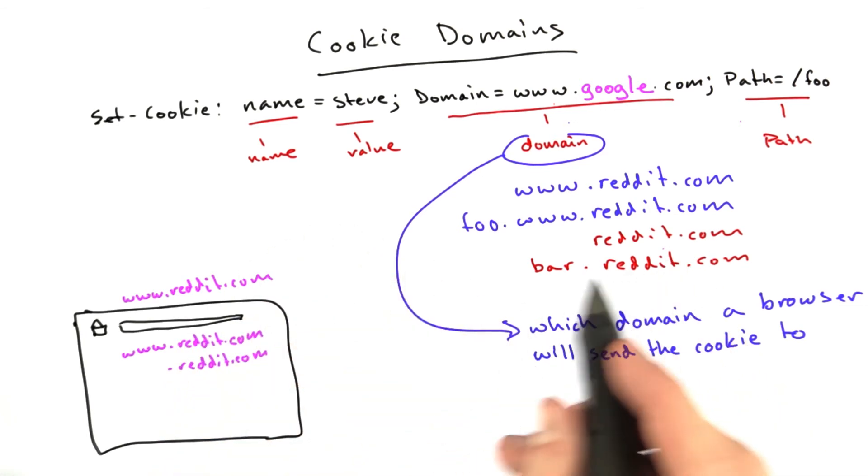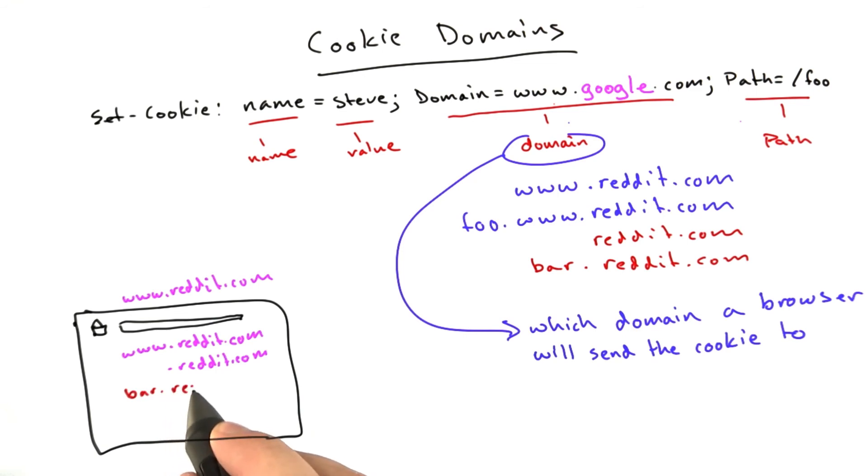We can't set a cookie for bar.reddit.com or foo.reddit.com. And this is to prevent, if you have multiple websites sharing the same top-level domain, appspot.com, for example. I can't set a cookie in my app that affects the behavior of your app. I can only set a cookie that gets sent with www and with the top level. That's how the domain restrictions work.